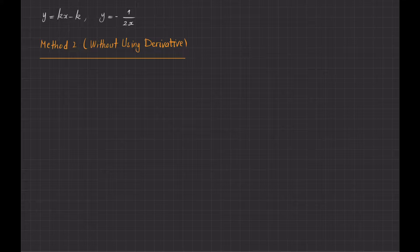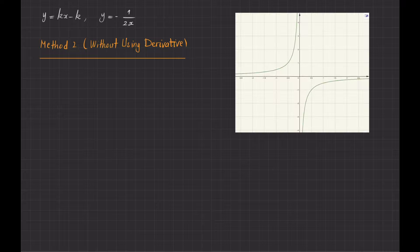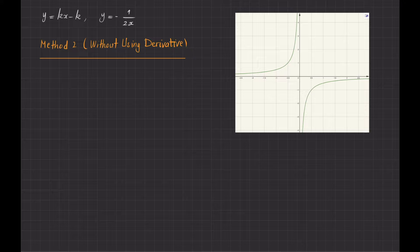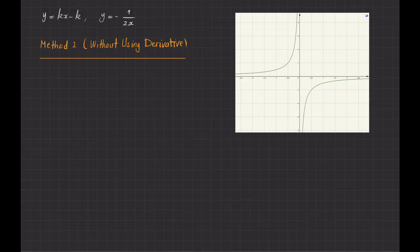Now I want to solve the same problem without using the notion of derivative. To explain this properly, let me draw the graph of the function. I've already done that with GeoGebra. This is the graph of y equals minus 1 over 2x — it's a hyperbola with two branches. The given line has y-intercept minus k, and since k is positive, the y-intercept is negative. Different lines passing through that intercept can either miss the curve entirely, intersect it at two points, or — in an extreme case — touch it at exactly one point.